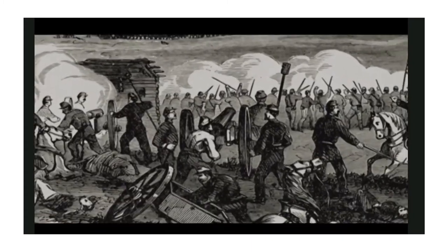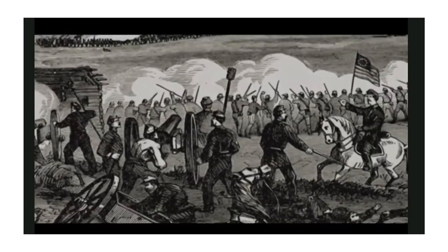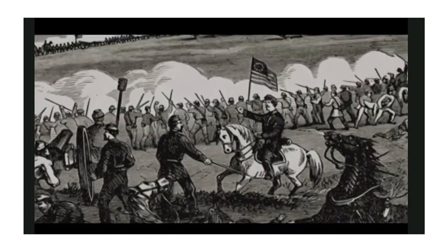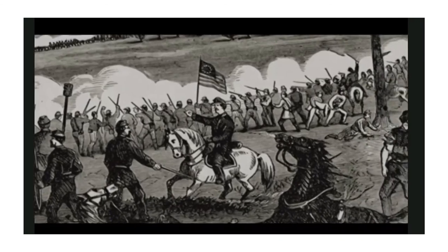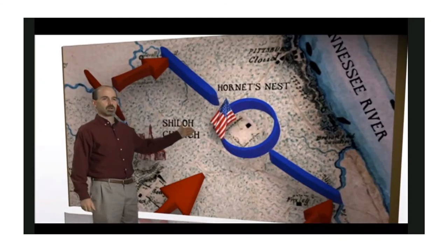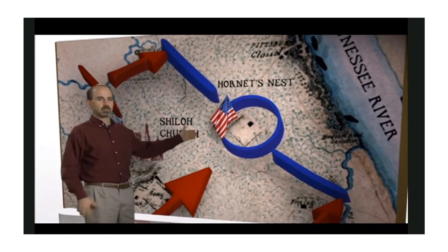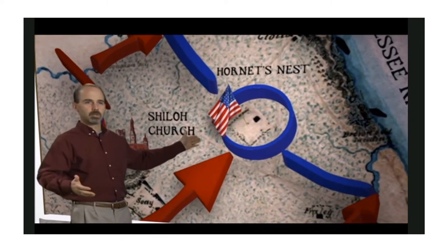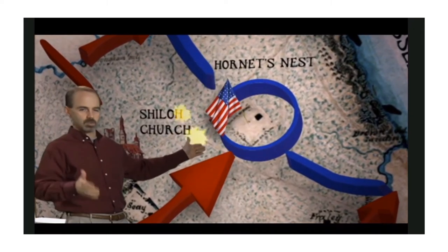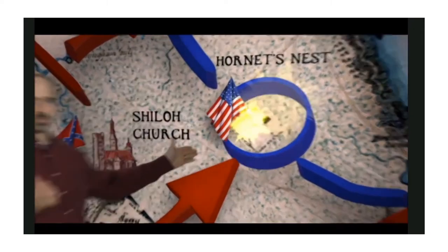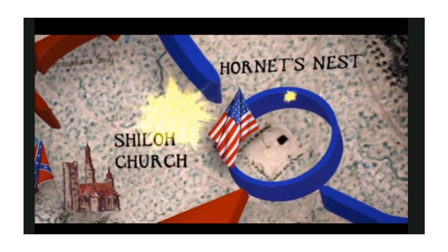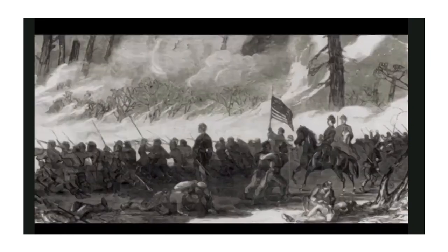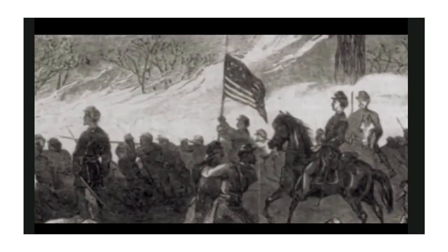But the Union line holds at a critical point that becomes known as the Hornet's Nest. Grant turns to his commander Benjamin Prentice and says, 'You have got to hold this position at all costs.' And Prentice and his men do just that. By the end of the day, the ground is littered with dead.